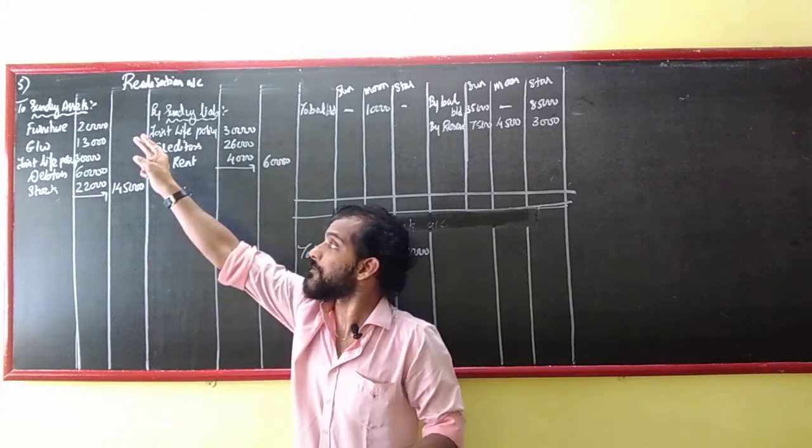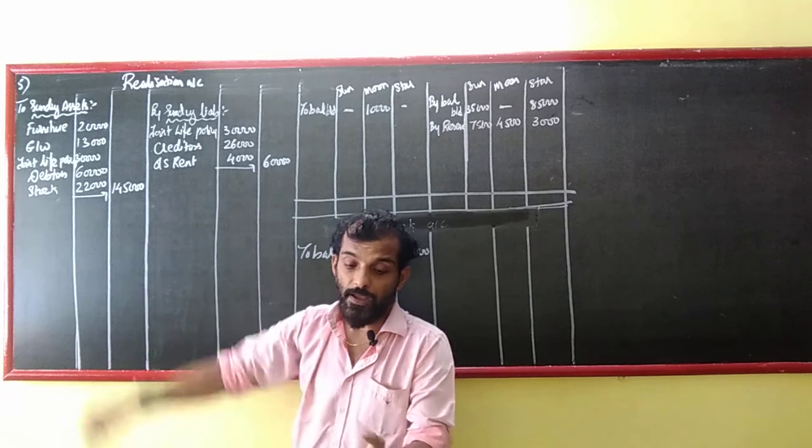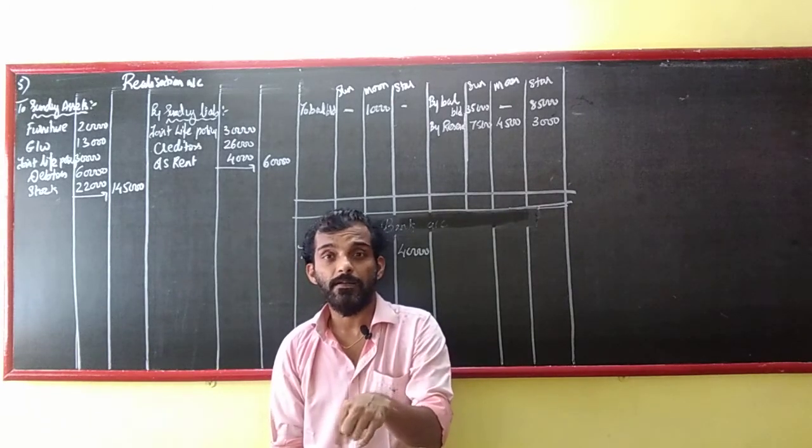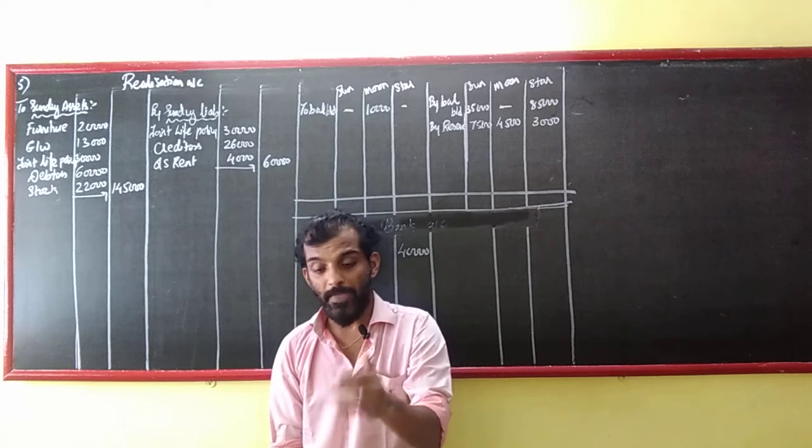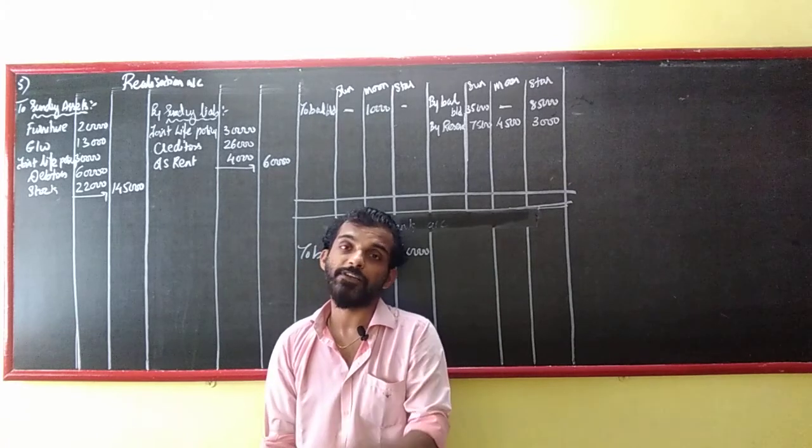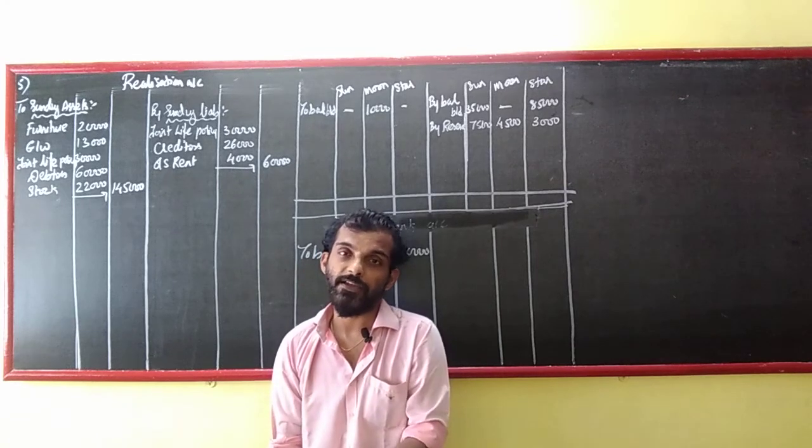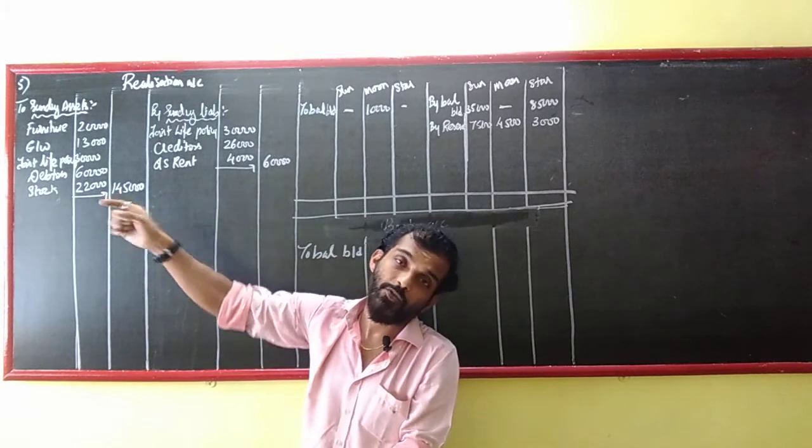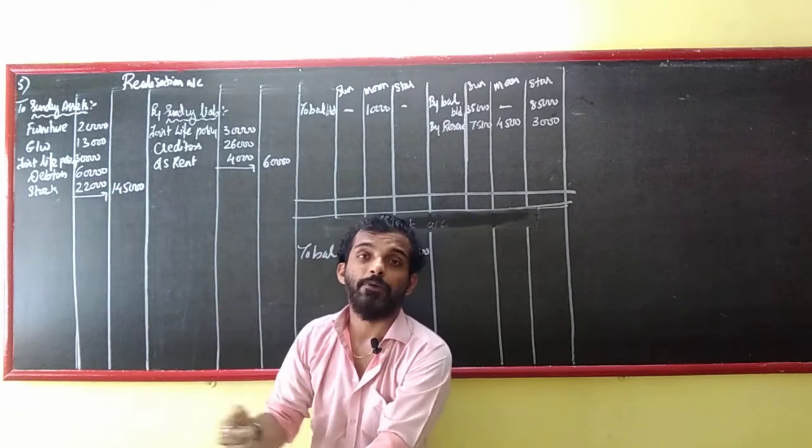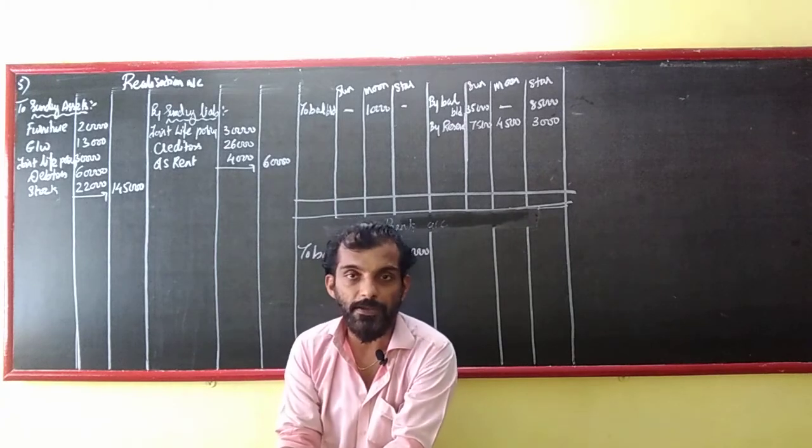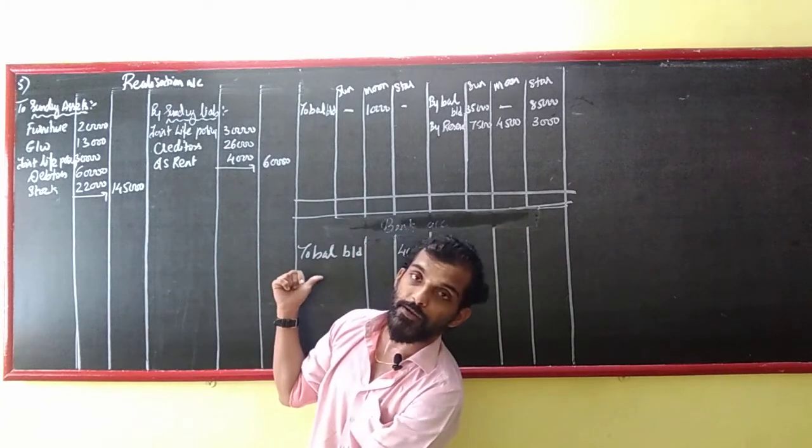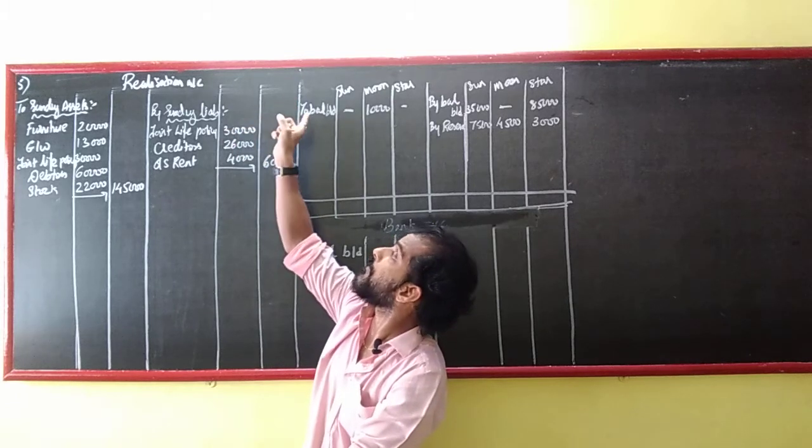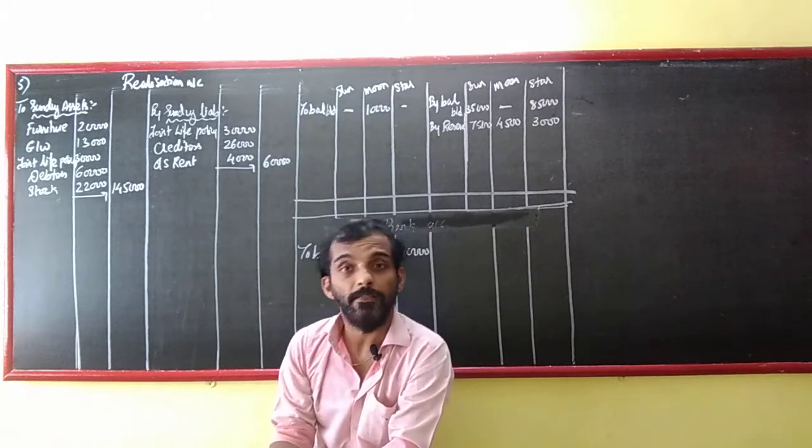I have already transferred all assets to Realization Account. Asset total is 195. From this, what will be excluded? Bank balance and Moon's capital. Bank balance is 40, Moon is 10. So 50 goes out. 195 minus 50 gives us 145. Bank will be transferred to bank account by balance 40,000. And Moon's capital to balance 10,000.